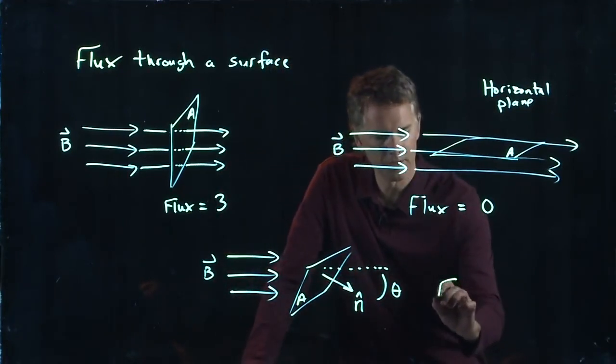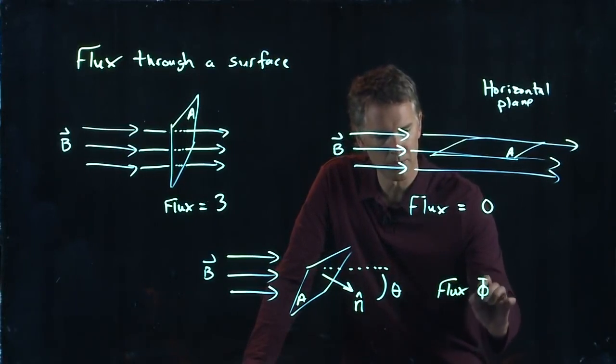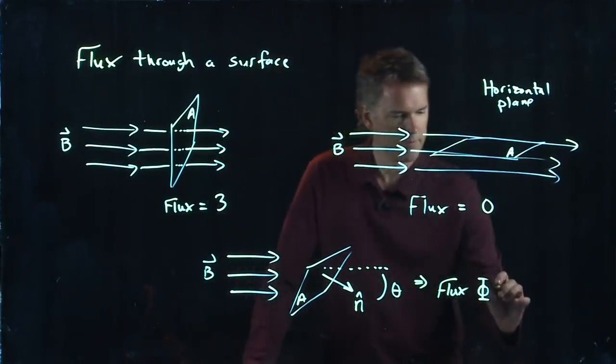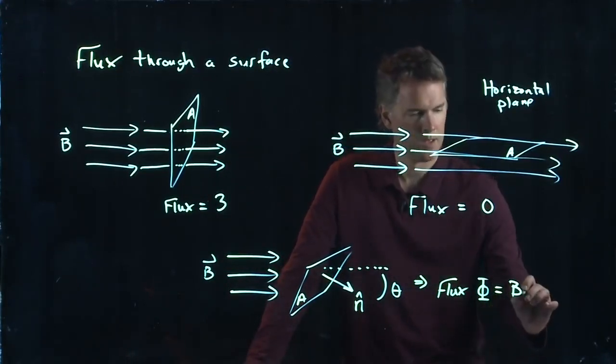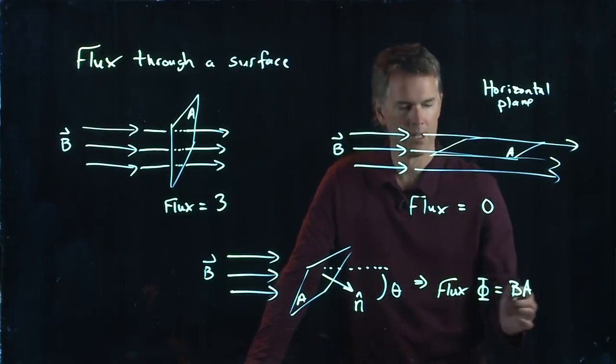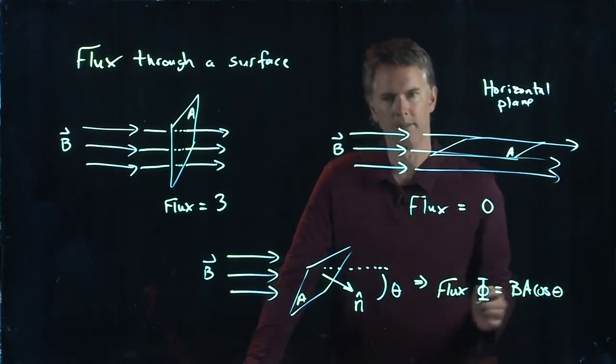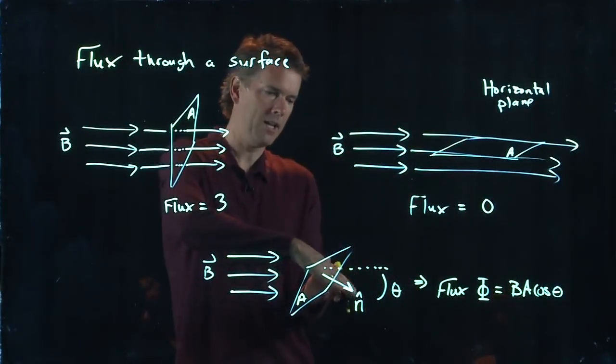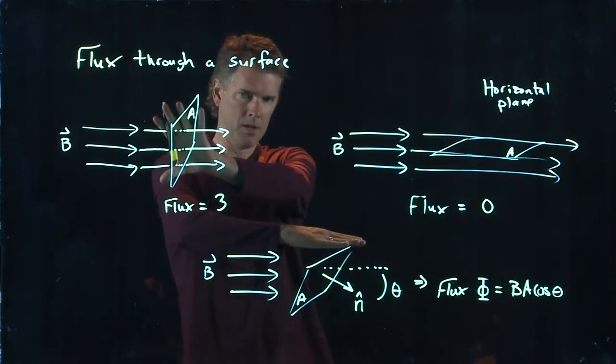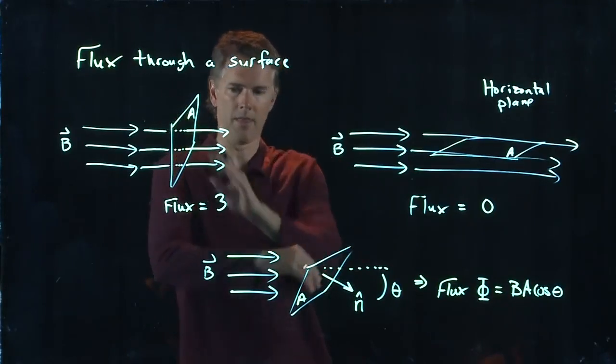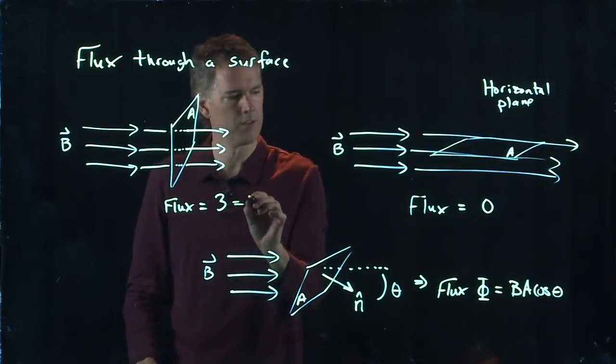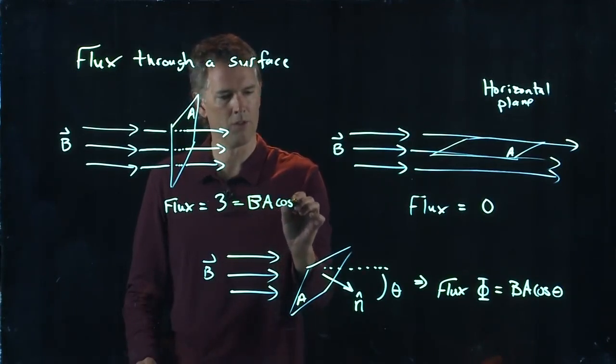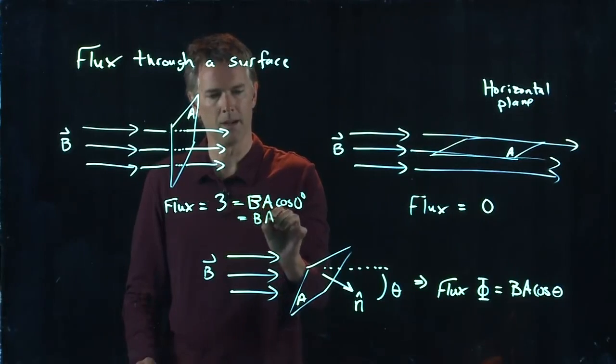And so flux, in this case, remember we write flux with a capital phi, is the following. It's B times the area times the cosine of that angle theta. When theta is zero, you're back to this case. And therefore the flux of three is just B times A times the cosine of zero degrees, which is just B times A.